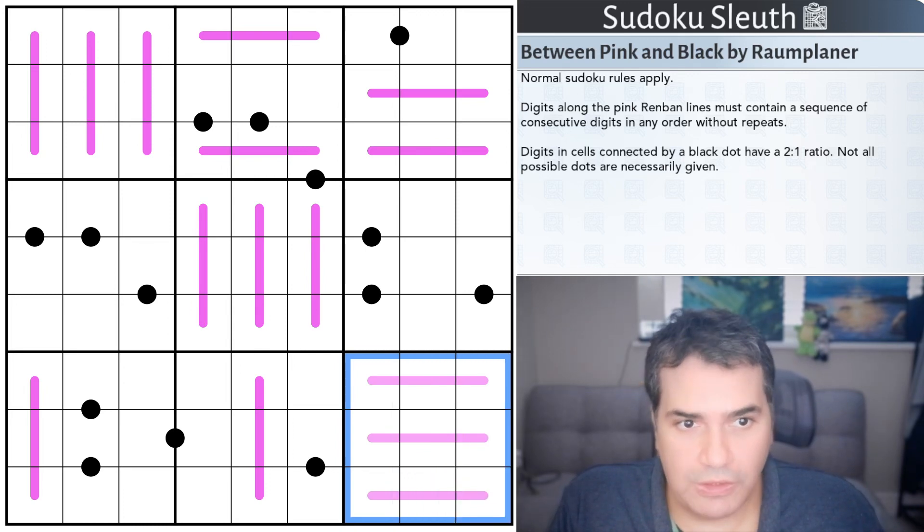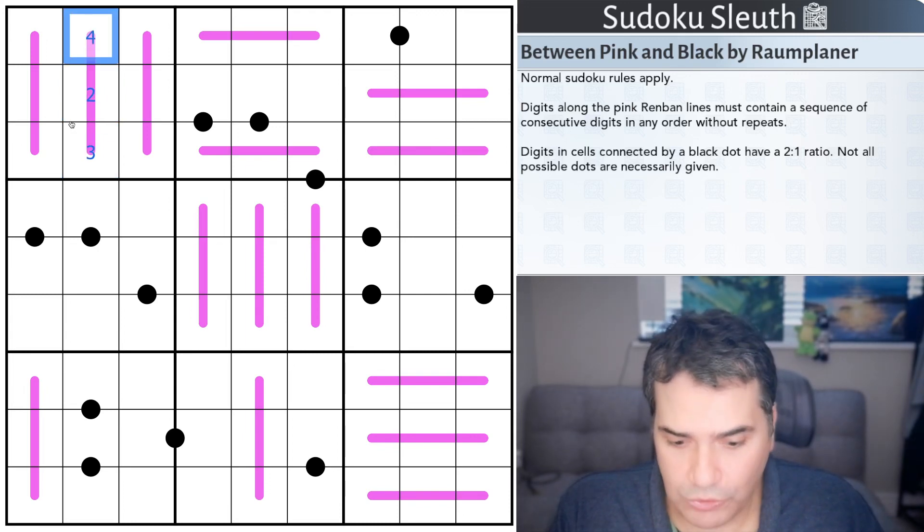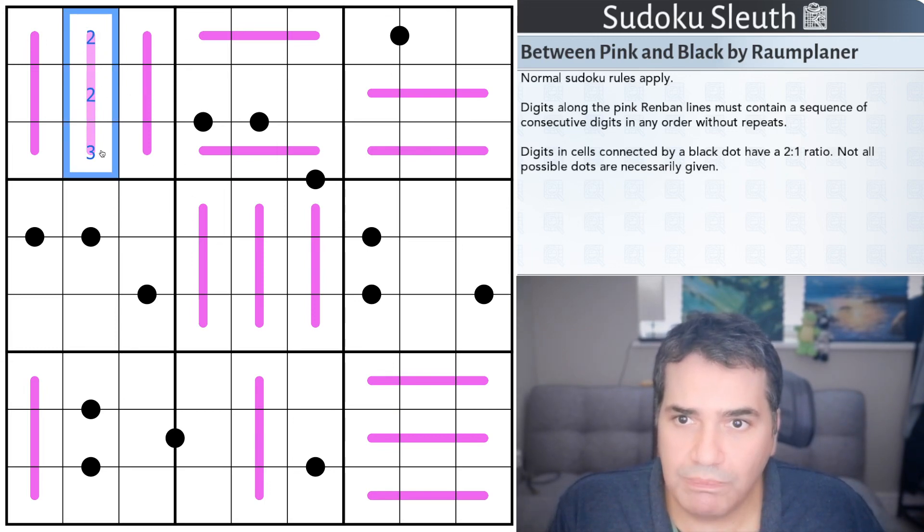We have two variant rules. The pink renban lines must contain a sequence of consecutive digits in any order. So if this cell is a two for example, either this is one, two, three, or this is two, three, four. What I clearly cannot do is have something like two, three, five. They're no longer a consecutive set and obviously cannot repeat a digit on a renban.